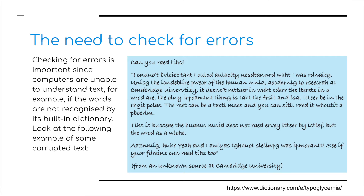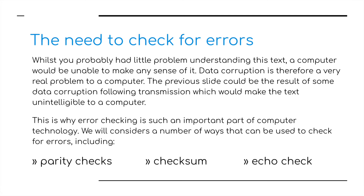I've put this on screen — I want you to have a look and see if you can read what's been written in this blue rectangle. Now your brain works in a very different way to a computer. A computer will look at this and will not be able to understand it — the words are not recognized in its inbuilt dictionary, therefore it can't understand it and it's basically corrupted text. So while you may have had a little problem understanding this text, a computer would be completely unable to make any sense of it at all. Data corruption is therefore a very real problem to a computer — the previous slide could be the result of some data corruption in the transmission, and this means that the text to a computer is completely illegible.